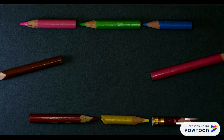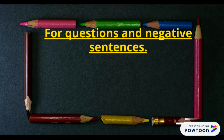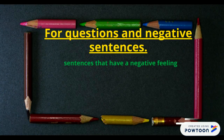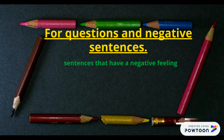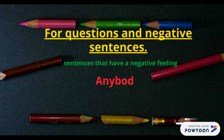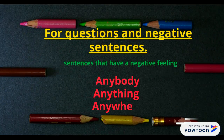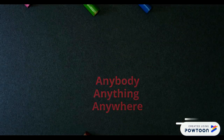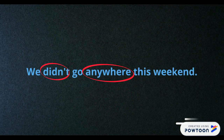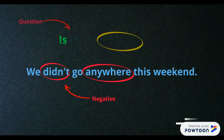For negative sentences, questions, or sentences that have a negative feeling, we use any-, anybody, anything, anywhere. For example: 'We didn't go anywhere this weekend.' 'Is there anything I can do?'